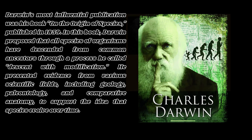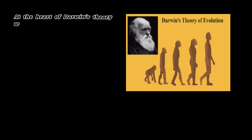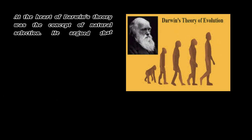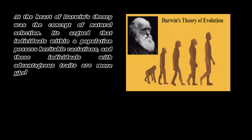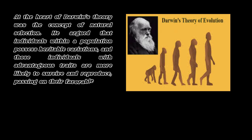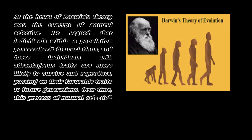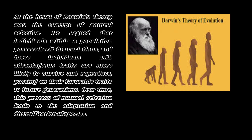At the heart of Darwin's theory was the concept of natural selection. He argued that individuals within a population possess heritable variations, and those individuals with advantageous traits are more likely to survive and reproduce, passing on their favorable traits to future generations. Over time, this process of natural selection leads to the adaptation and diversification of species.